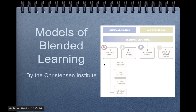There are four types laid out by the Christensen Institute: the rotation model, the flex model, the a la carte model, and the enriched model. I will start with the rotation model and talk about some of the different variations that we see here.